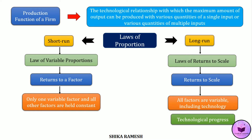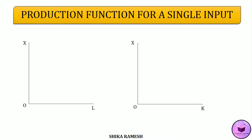We shall see the production function for a single input with the help of a graph. In this graph, the x-axis measures the number of labourers and the y-axis measures the number of units of output, and we get an upward sloping production function. This shows that when more and more units of labour are employed, output increases. Here, output is a function of labour while all other factors are considered constant.